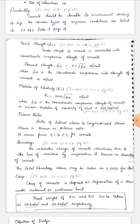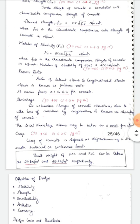The modulus of elasticity of steel is 200 kilo-Newton per mm². Poisson's ratio is the ratio of lateral strain to longitudinal strain. For concrete, it varies from 0.1 to 0.34.